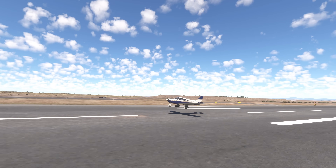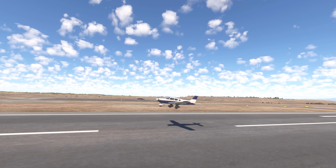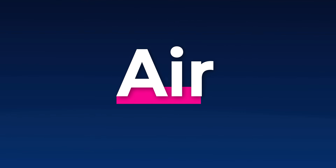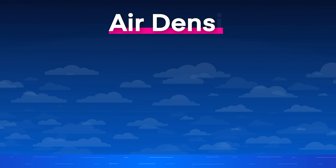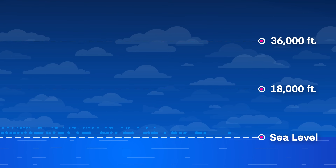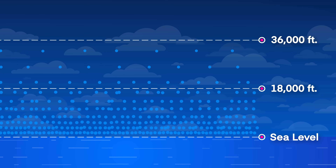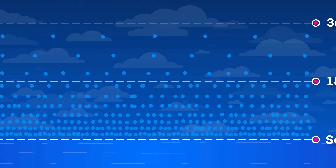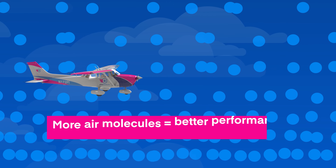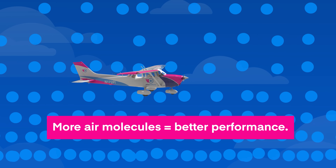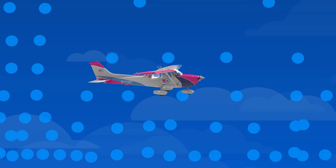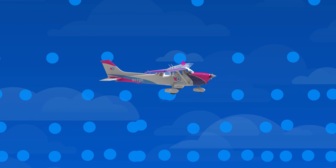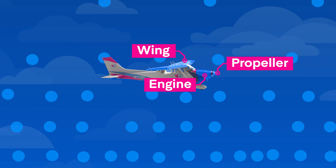Before you take off, you need to make sure that your aircraft has the performance it needs to complete the flight safely. Can you accelerate fast enough? Can you climb quickly enough? And can you stop soon enough at the end of the runway? That all depends on the air — more specifically, the air density. And you can't see it, but the air around us is like a fluid filled with molecules, and your airplane depends on having plenty of those molecules in order to fly.